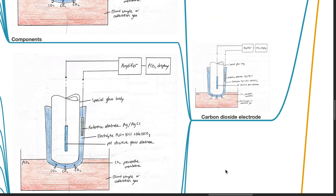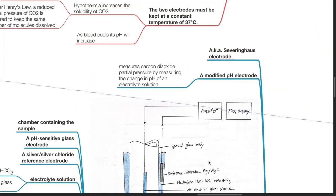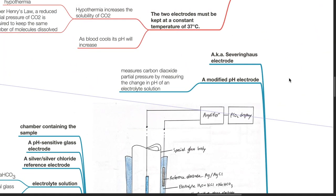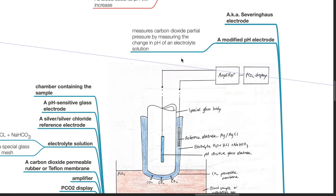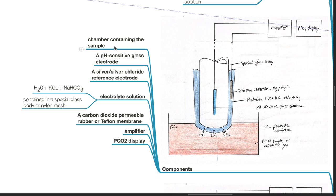The carbon dioxide electrode, also known as the Severinghaus electrode, is a modified pH electrode that measures carbon dioxide partial pressure by measuring the change in pH of an electrolyte solution. Components include a chamber containing the sample, a pH-sensitive glass electrode, a silver-silver chloride reference electrode, an electrolyte solution consisting of H2O plus HCl plus NaHCO3 contained in a special glass body or nylon mesh, a carbon dioxide permeable rubber or Teflon membrane, an amplifier, and a PCO2 display.